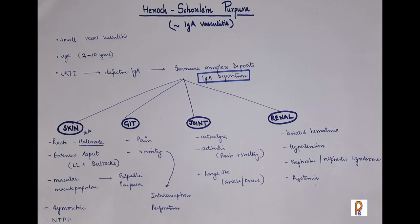Another very significant involvement is renal involvement. It may lead to isolated hematuria, proteinuria, hypertension, or there may be nephritic or nephrotic syndrome. Azotemia may also be present.